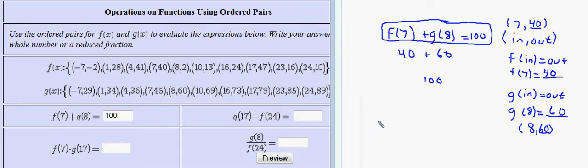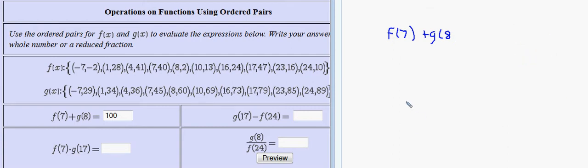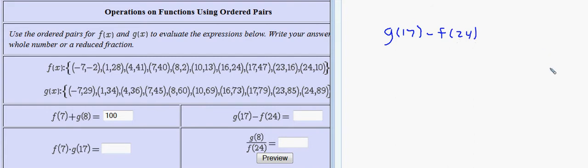Moving along to the next one, I have g of 17 minus f of 24. I'll clear some of the work out to give room to write. So g of 17 minus f of 24 — g of 17 means 17 is the input, so as a point that would look like (17, ?). Moving over to g, not f, I find the point whose x-coordinate is 17. It's right here — it says 79. So g of 17 is 79.